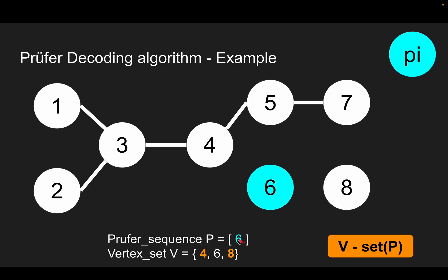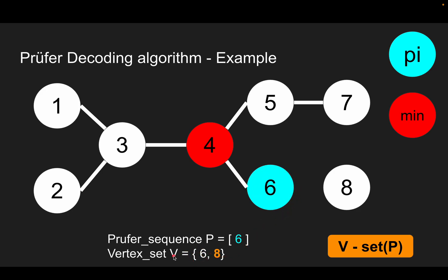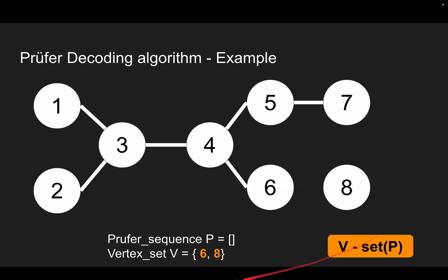Next iteration, pi is 6. The smallest element in the yellow set is 4. We connect the smallest vertex with pi. We remove 4 from V and remove pi from P. After removing pi, since there are only two elements remaining in V, we connect those two remaining vertices, and the algorithm ends.